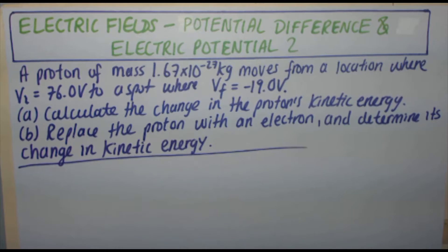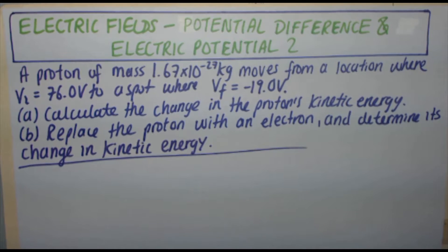Hey guys! Let's do another potential difference and electric potential problem. A proton of mass 1.67 times 10 to the minus 27 kilograms moves from a location where Vi equals 76.0 volts to a spot where Vf equals minus 19.0 volts.